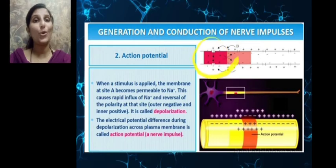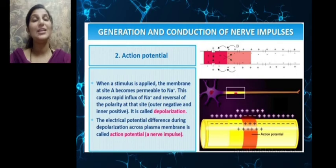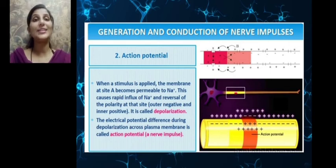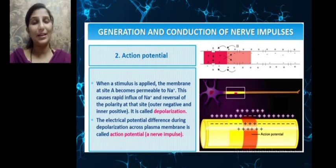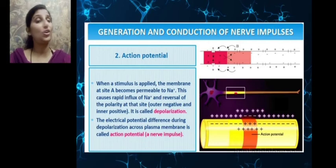Initially the whole axon was polarized, but at the site where there was a reversal of charge, it is said to be depolarized. The electrical potential difference during depolarization — at this site of depolarization — across the plasma membrane of the neuron is called the action potential, or nerve impulse. At the site of stimulus, increased permeability to sodium ions causes sodium to move from outside to inside, reversing the charge so that positive charge accumulates inside and negative charge accumulates outside.